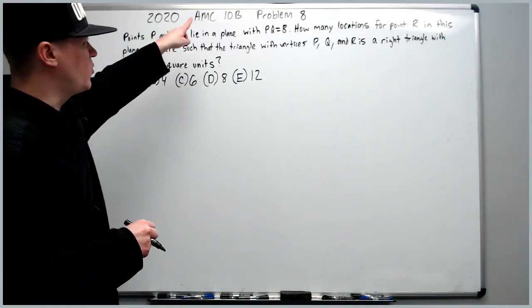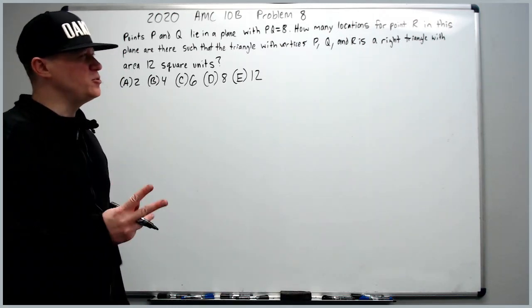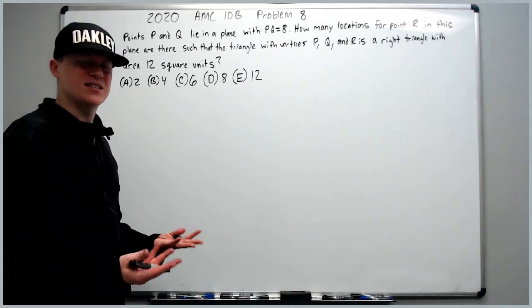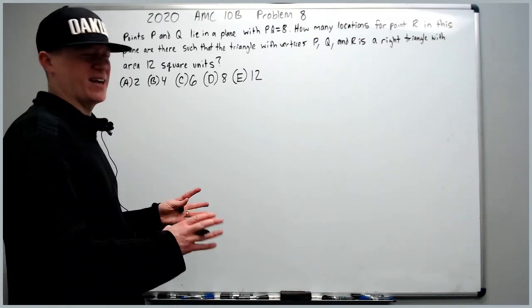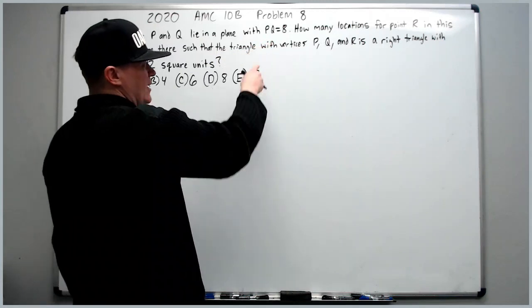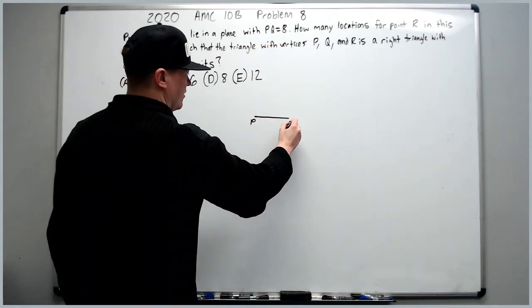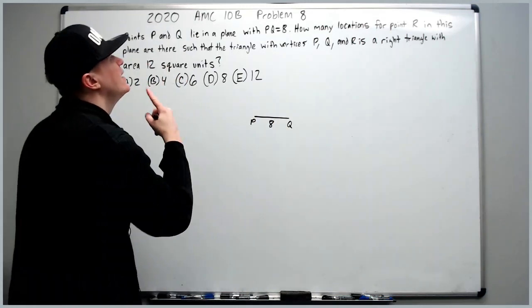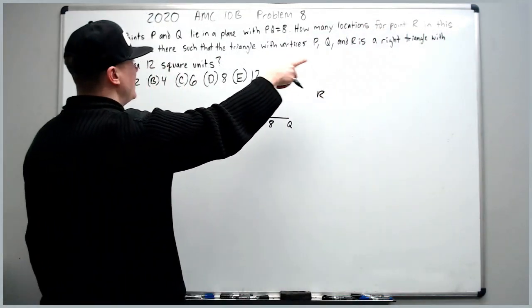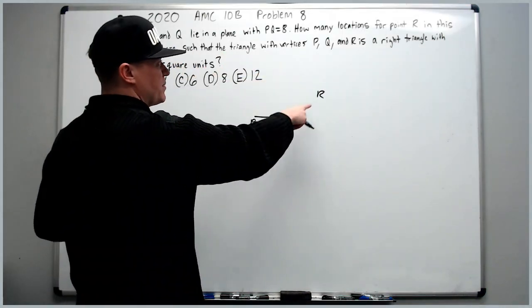Okay, and now on to the 2020 10B problem number 8. I'm going to cover two solution methods for this, one to confirm the other, and then a slick solution for the second one. Points P and Q lie in the plane with PQ equal to 8. Let's create that. It doesn't matter how long you make it, just call it 8. How many locations for point R in this plane are there such that the triangle with those vertices is a right triangle with area 12 square units?